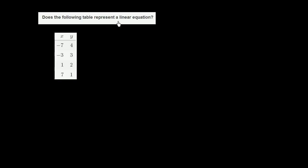Does the following table represent a linear equation? So let's see what's going on here. When x is negative 7, y is 4. Then when x is negative 3, y is 3.